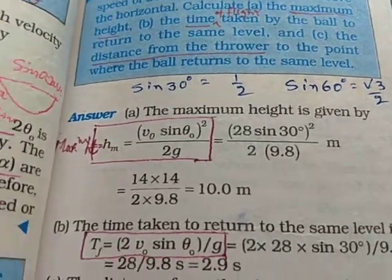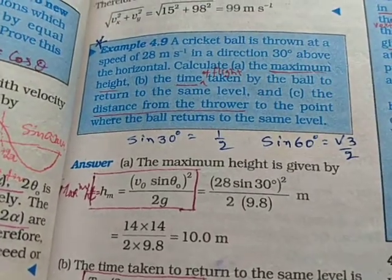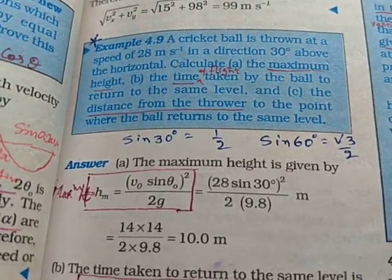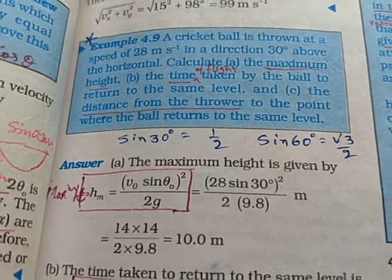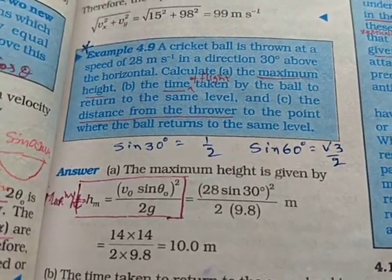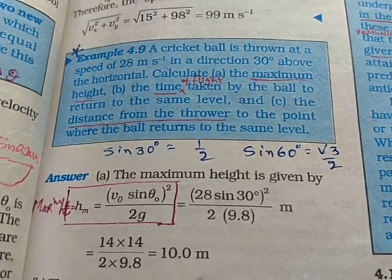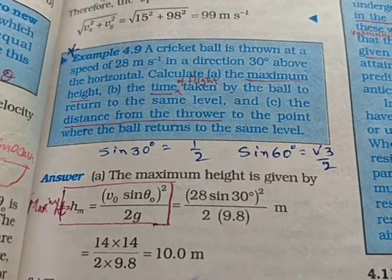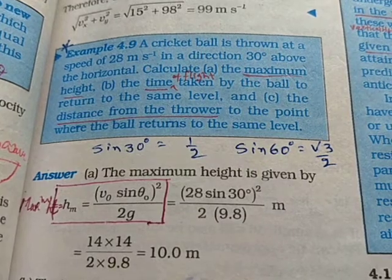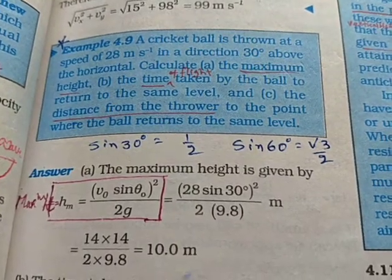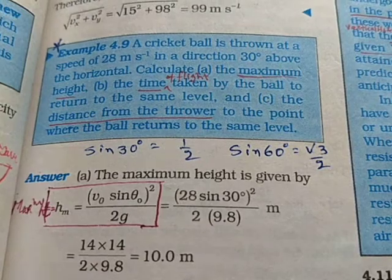So, you know that in this case the value of the angle of projection theta is 30 degrees given. And therefore the vertical component of the velocity of the cricket ball will be 28 sin 30 degrees.